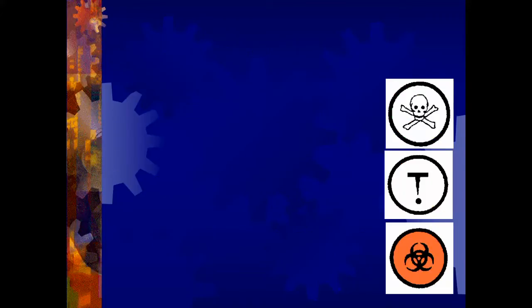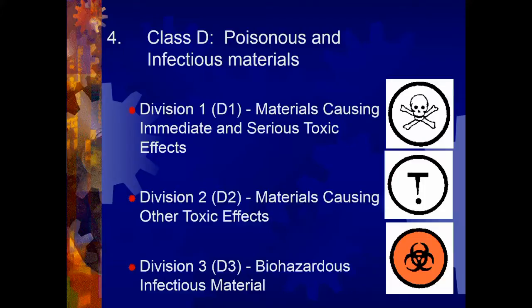Class D, poisonous and infectious materials, is one classification broken up into three divisions. Division 1 is for immediate and toxic effects. For example, on a hot day, someone mistook paint thinner — a clear, colorless liquid — for water and drank a significant quantity. True story. The patient had to be rushed to a hospital to have their stomach pumped.